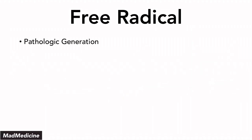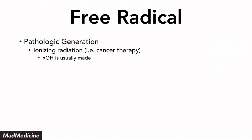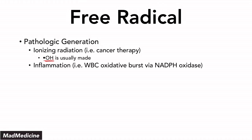When it comes to the pathologic generation of free radicals, you need to understand what's also happening. Ionizing radiation can cause free radicals to form, especially the hydroxide free radical — that's the most common free radical formation from ionizing radiation. Inflammation can also cause free radicals to form. White blood cells need to defend your body, so they undergo an oxidative burst where they release a lot of free radicals to kill infections or anything pathologic in our bodies.